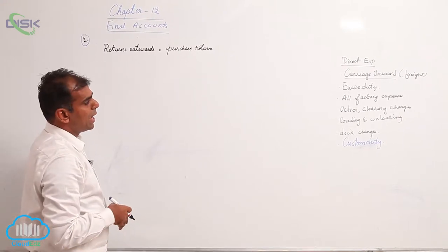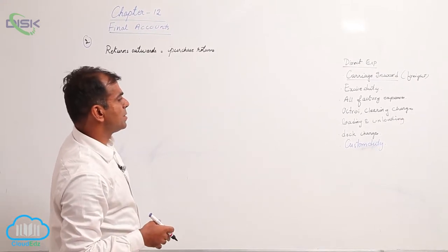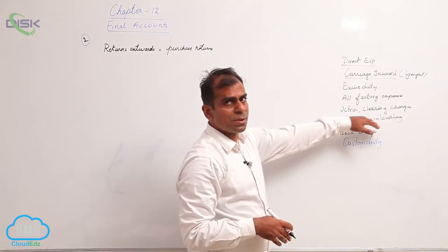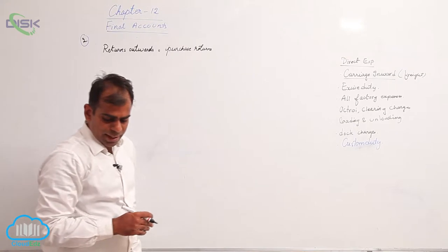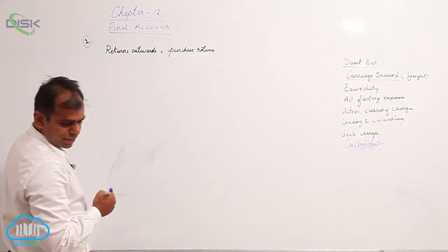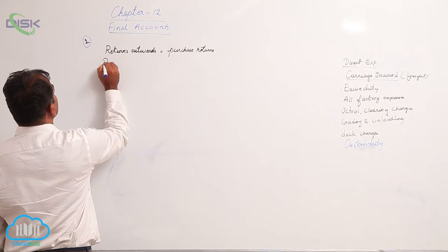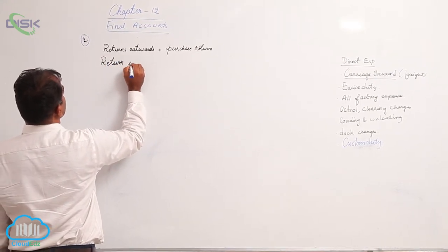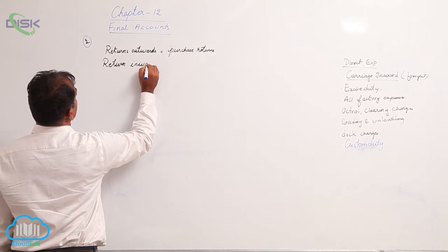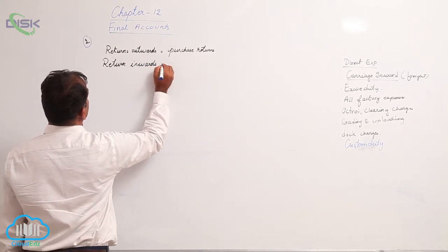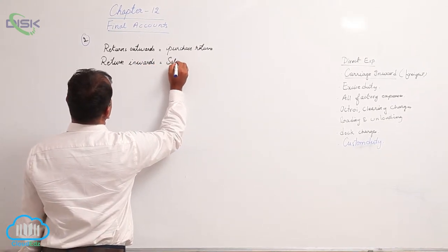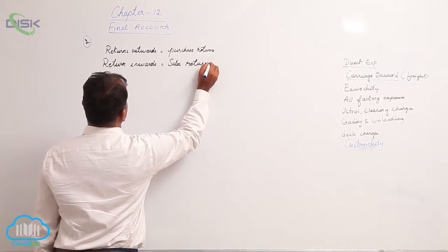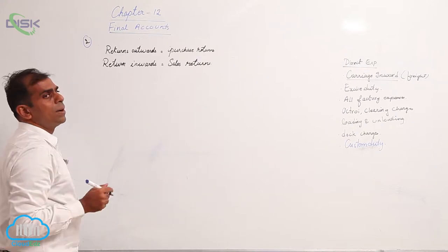Similarly, you have clearing charges. Clearing charges are direct expenses, already in the list. Then you have your return in words. Return in words is nothing but your sales returns. Sales returns is nothing but return in words.